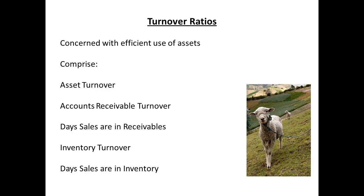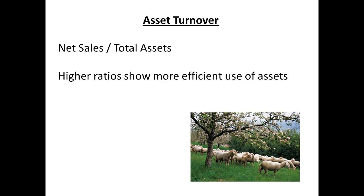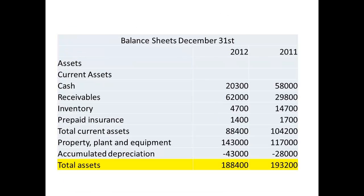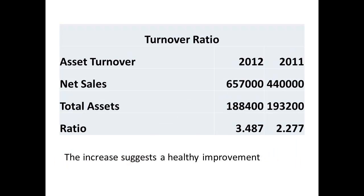The next section of ratios is the turnover ratios, which give an indication of the efficient use of the assets. The ratios comprise the asset turnover, accounts receivable turnover and day sales in receivables, and the inventory turnover and day sales in inventory. The asset turnover ratio is calculated by dividing the net sales by the total assets. Higher ratios show a more efficient use of assets. The calculations show an improvement from 2.277 in 2011 to 3.487 in 2012.